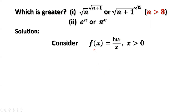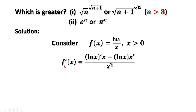We are going to prove this function is decreasing when x is greater than or equal to e. To prove this, we use the calculus method and consider the first-order derivative of f of x. Because the right-hand side is a fraction, we can use the quotient rule to derive the first-order derivative of f of x. The first-order derivative equals the derivative of the numerator times the denominator, minus the numerator times the derivative of the denominator, all divided by the denominator squared.